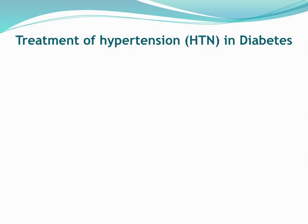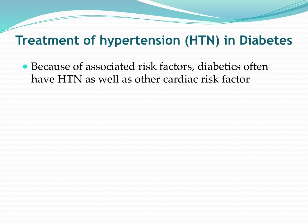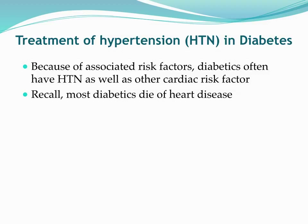In our diabetics — whether you're a nurse, public health planner, or whatever — we also want to treat hypertension, because of associated risk factors. Our diabetics are often hypertensive, and with that hypertension comes risk of cardiovascular disease. Most diabetics aren't going to die from diabetes — they're going to die from heart disease, stroke, or a myocardial infarct.